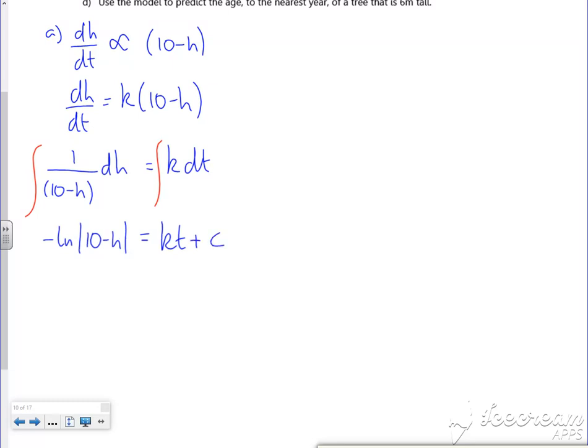Now I want it in terms of h. I'm going to switch sides. So ln|10-h| equals minus kt.